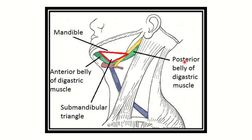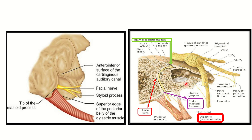We have to find the nerve which lies close to the posterior belly of the digastric muscle and supplies or innervates it. Here we can see the facial nerve is very close to the posterior belly of the digastric muscle, and from the facial nerve a branch comes to supply the digastric muscle.